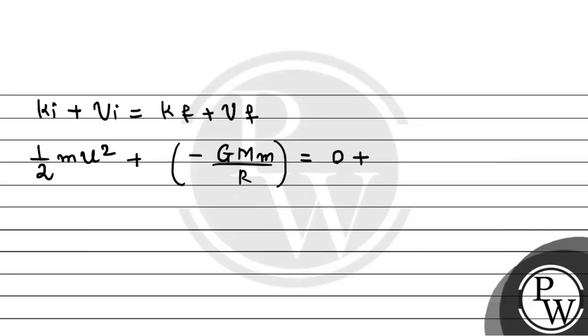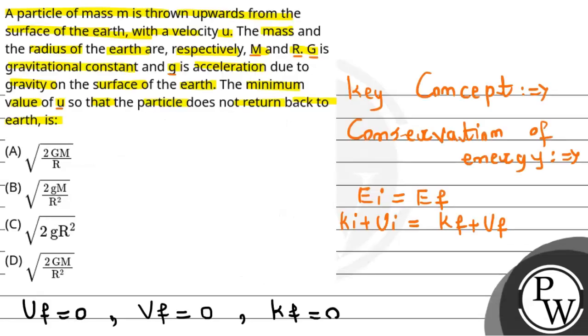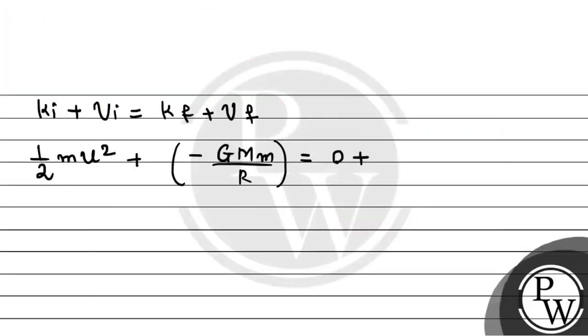This will be equals to final kinetic energy zero, because final velocity is zero, because the particle is reaching to the maximum height. And also potential energy will be zero, because the distance is very large. So if I take negative GMm/R to the other side, we will get that one-half m u squared is equals to GMm divided by R.